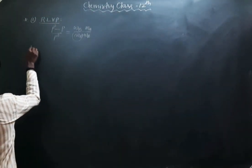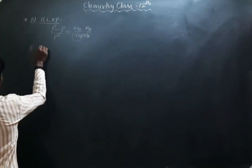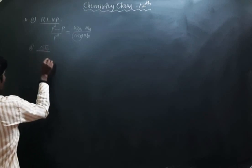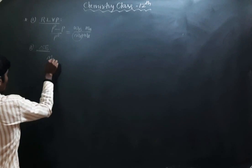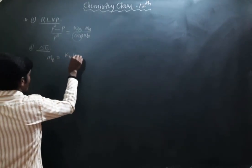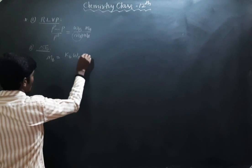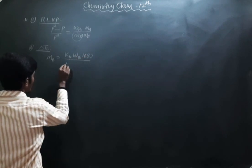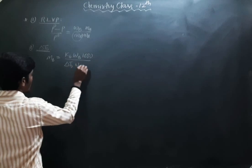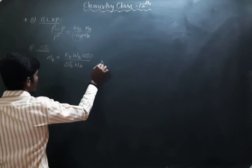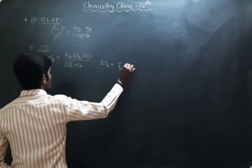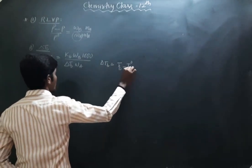The second colligative property is elevation in boiling point, that is ΔTb. The molar mass formula is: MB = Kb × WB × 1000 divided by ΔTb × WA, where ΔTb = Tb minus T₀b.